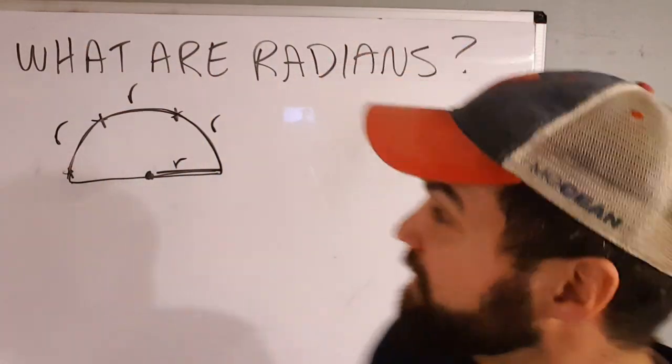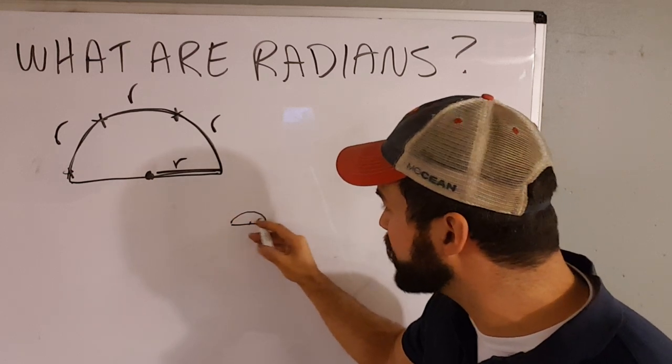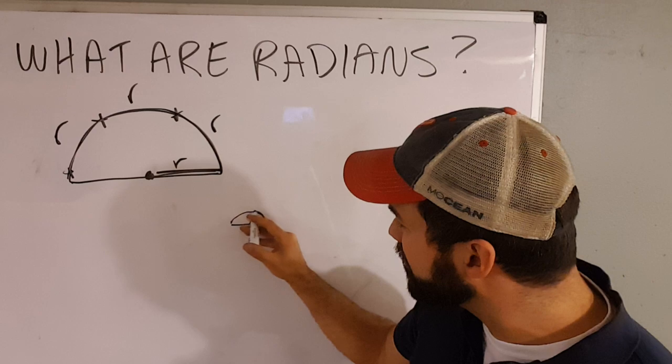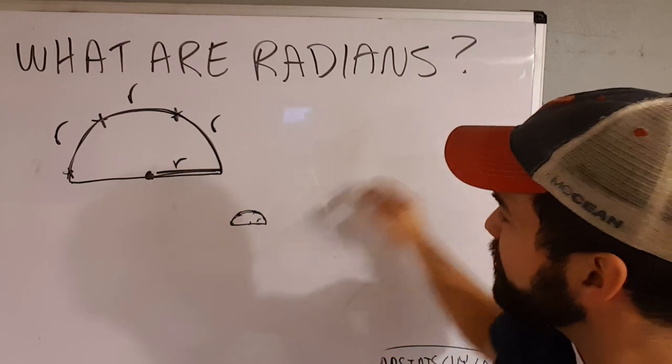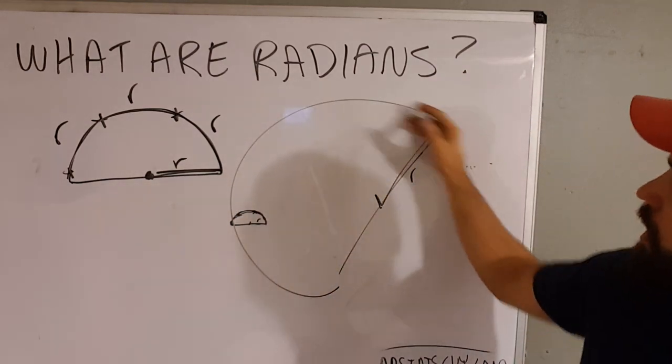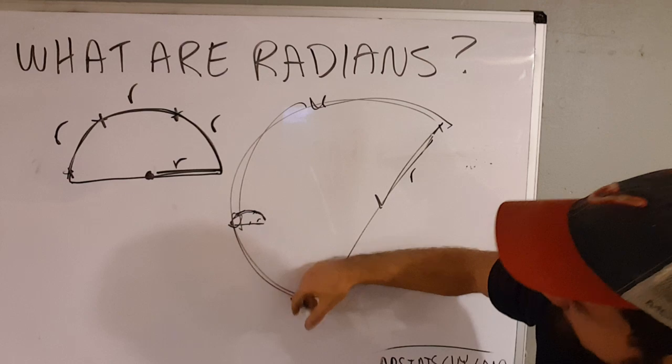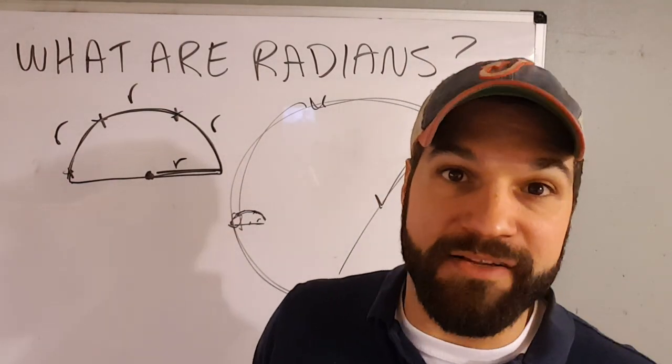Any circle, always. Even a tiny little circle. Guess how many of these little radiuses go around this guy? One, two, three, and a little bit more. Guess how many go around this big half of a circle? Here's my radius. One, two, three, and a bit more. Those are radians.